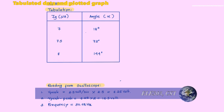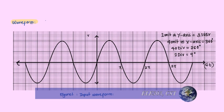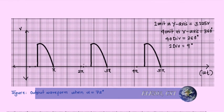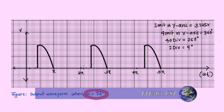From the oscilloscope readings, the V-peak observed is 6.25 volts. To calculate V-peak to peak, we multiply V-peak by two, obtaining 12.5 volts. The frequency is 50.02 Hz. This is the input waveform obtained on the oscilloscope. When the firing angle is changed to 18 degrees, we can see the corresponding waveform. When the firing angle is changed to 72 degrees, this is the waveform obtained on the oscilloscope.